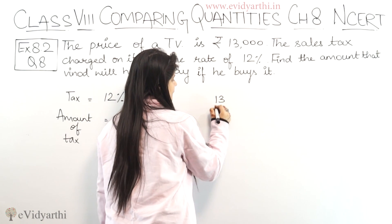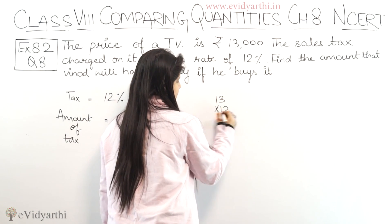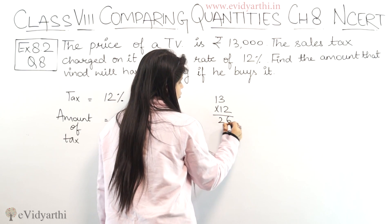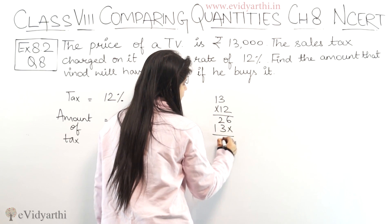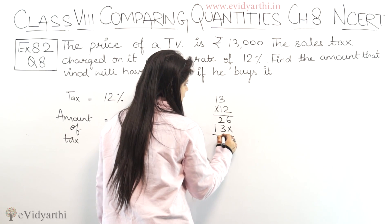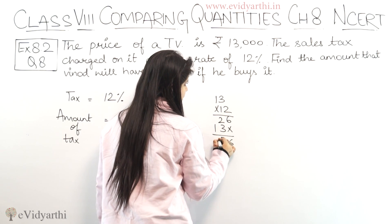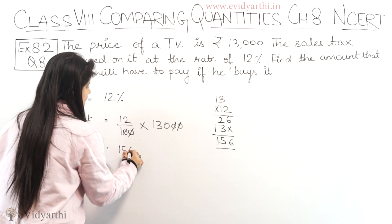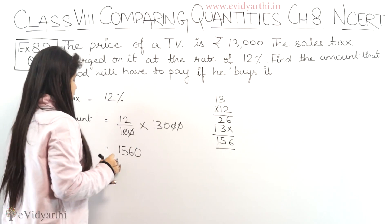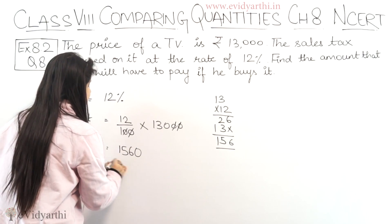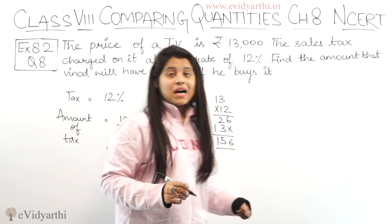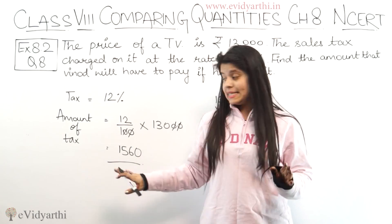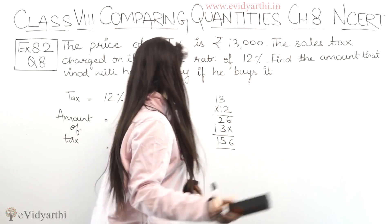Let's multiply. 12% of 13,000 — calculating this gives us 1,560. So the tax amount is Rs. 1,560.